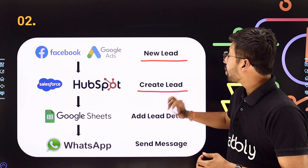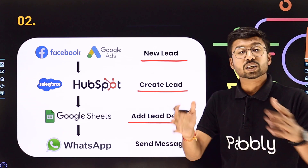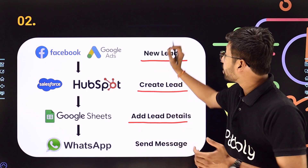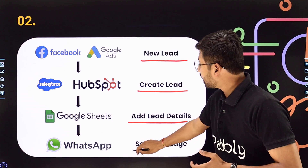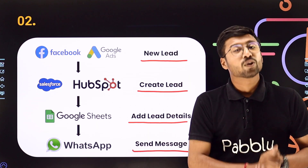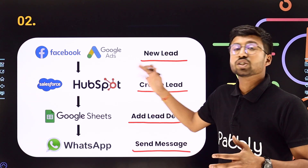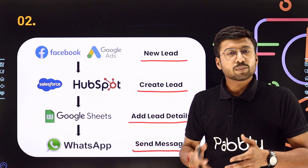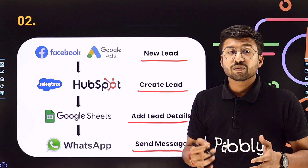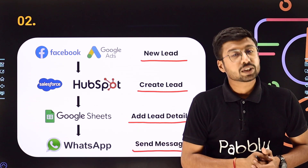Also for backup or for a record, you can add the details of that lead into a Google spreadsheet. And to nurture that lead, you can automatically send a WhatsApp message to the same lead as well. All of this can be done using a single automation. If you want, instead of these applications, you can change and use the platform of your choice. You can also send SMS or email notifications to your new leads instead of WhatsApp.